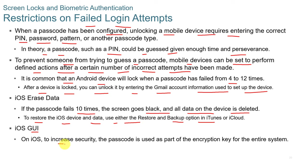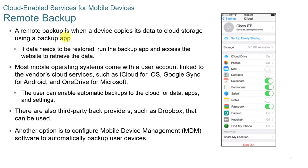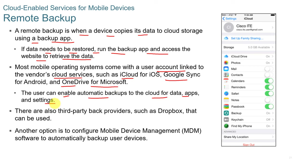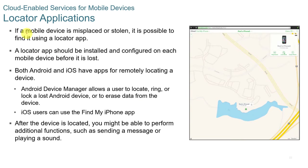On iOS, the passcode is used as part of the encryption key for the entire system. A remote backup is when a device copies its data to cloud storage using a backup app. Most mobile operating systems come with user accounts linked to vendor cloud services such as iCloud, Google Sync, or OneDrive for Microsoft. Users can enable automatic backups to the cloud for data, apps, and settings. Third-party backup providers such as Dropbox can also be used. Another option is to configure Mobile Device Management (MDM) software to automatically back up user devices.